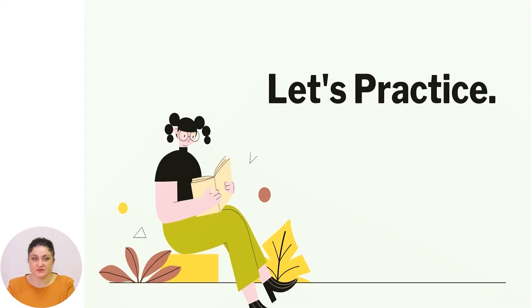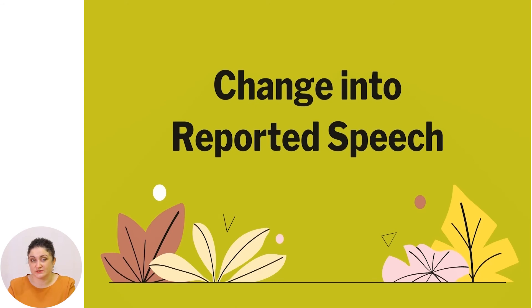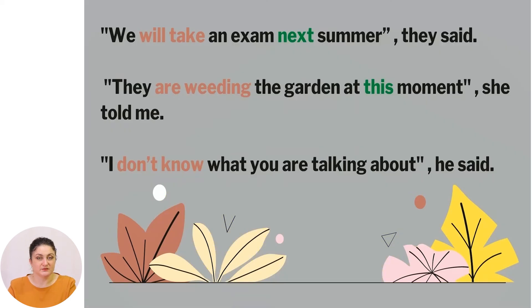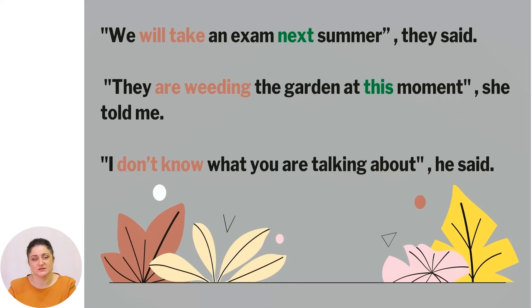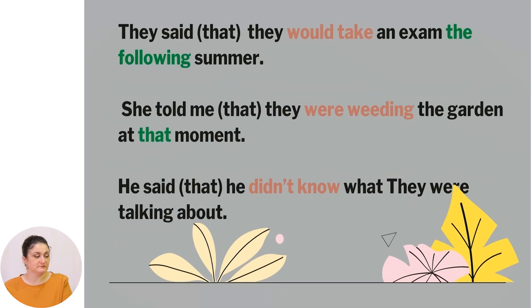Now it's time for us to practice. Change into reported speech — let us apply all the rules we have discussed today. 'We will take an exam next summer, they said.' 'They are weeding the garden at this moment, she told me.' 'I don't know what you are talking about, he said.' Pay attention to the highlighted words — not just changing the verb form, but also nouns and adverbs, especially adverbs of time.